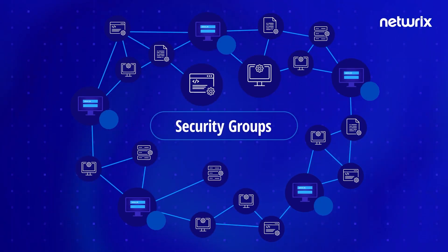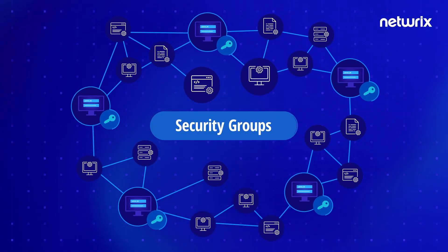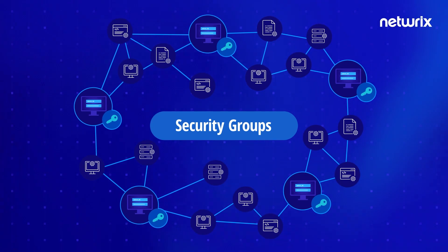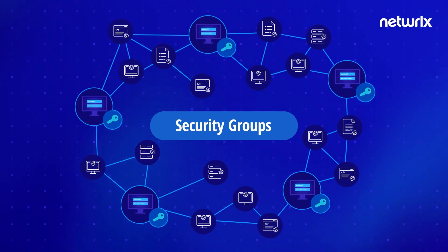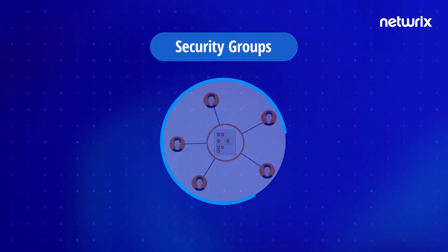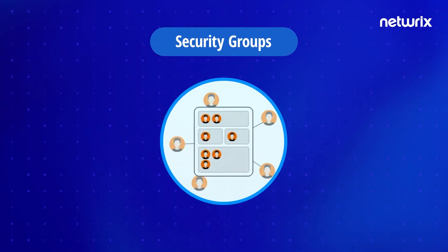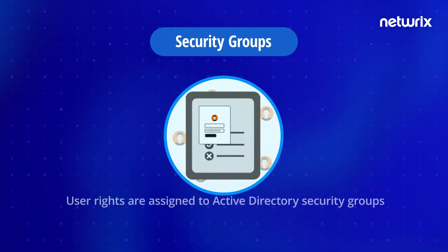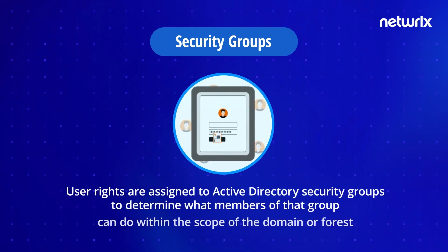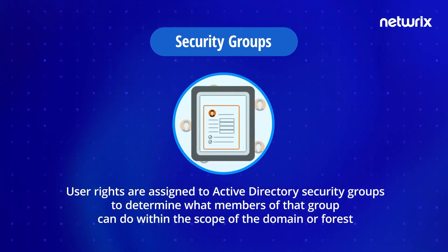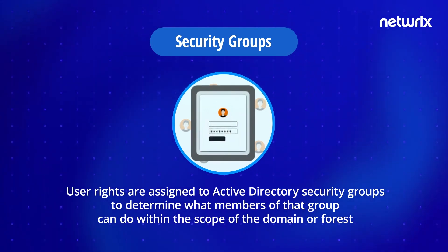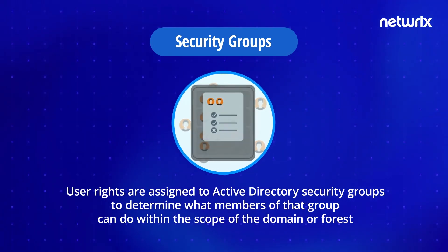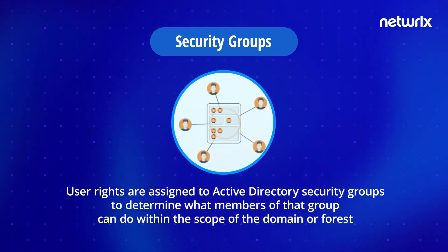Used with care, Active Directory security groups provide an efficient way to assign access to resources on your network. When using security groups, you can assign user rights. User rights are assigned to Active Directory security groups to determine what members of that group can do within the scope of the domain or forest.